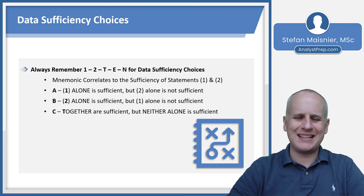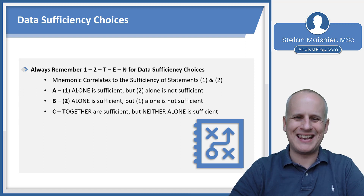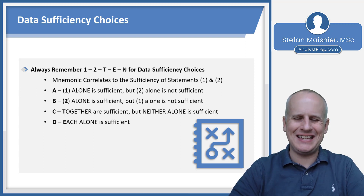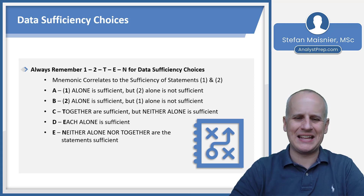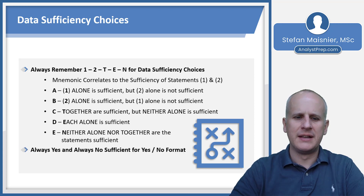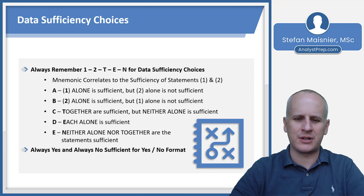Choice C indicates that together — the T in 1, 2, 10 — the statements are sufficient, but neither of them alone was sufficient. Choice D correlates to the E in 1, 2, 10, and indicates that each of condition 1 and condition 2 alone is sufficient. And then choice E correlates to the N, indicating that neither alone nor together are the statements sufficient. Remember that always yes and always no are sufficient outcomes for the yes/no data sufficiency format.